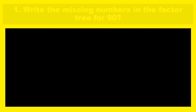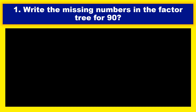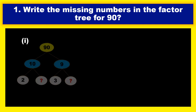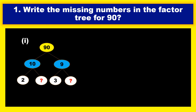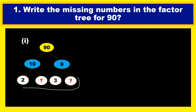So let us take the first problem: write the missing numbers in the factor tree for 90. Here he gave the factor tree with some missing numbers that we should fill. Let us recall the factor tree method. The first step is the given number is split into a product of two numbers. If they are composite — here 10 and 9 are composite — they are again split into the product of two numbers. This should be continued till all the factors are prime numbers.